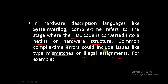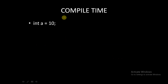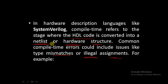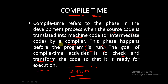Common compile time errors include type mismatches or illegal assignments. For example, if we declare a variable of integer data type and try to assign an incompatible value, the compiler will detect this during compile time. Basically, the compiler checks syntax, converts source code into machine code, converts HDL code into netlist or hardware structure, and checks for type mismatches and illegal assignments. Compile time is essentially basic functionality checking and syntax checking — there is no execution of operations at this stage.